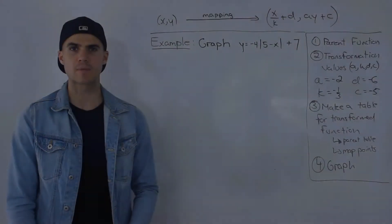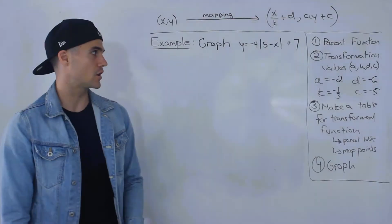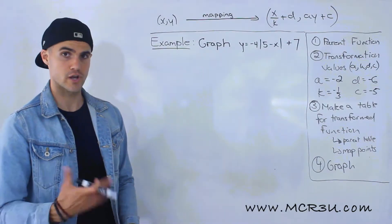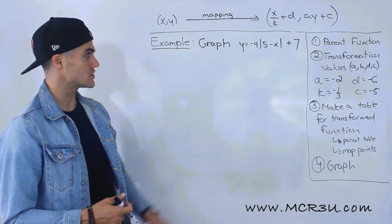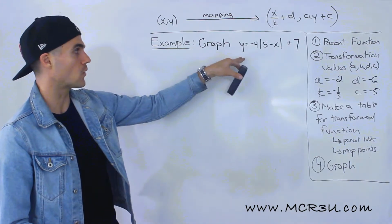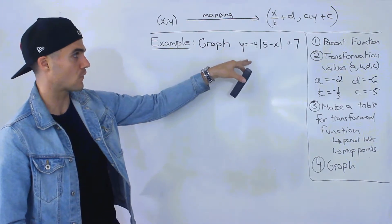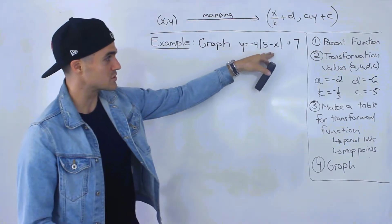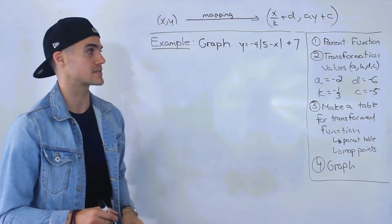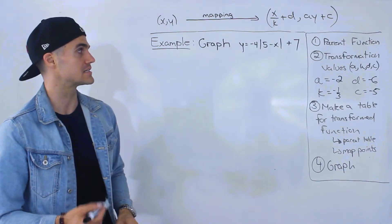What's up, everyone? Welcome back. Patrick here. Moving on to the next example for transformations of functions, we've got to graph this function here: y equals negative 4, absolute value of 5 minus x, plus 7.